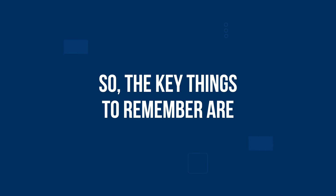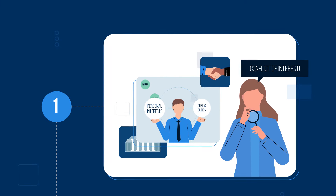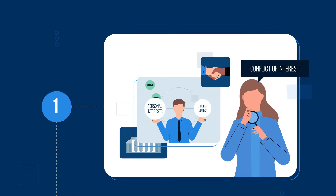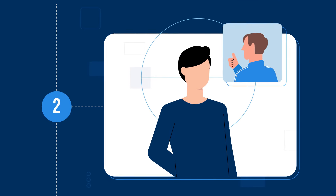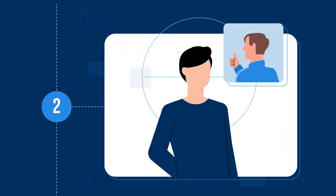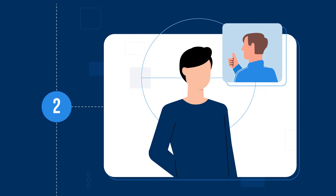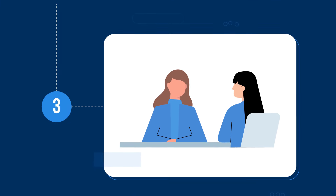So, the key things to remember are: 1. Conflicts of interest occur when a reasonable person might perceive that your personal interests could be favoured over your public duties. 2. If you conceal, understate or take advantage of a conflict of interest, you might be engaging in corrupt conduct. 3. Disclose your conflict of interest and comply with the plan put in place to manage it.